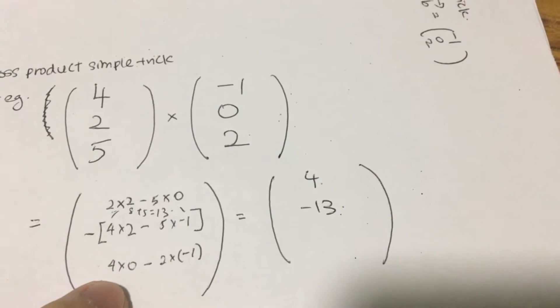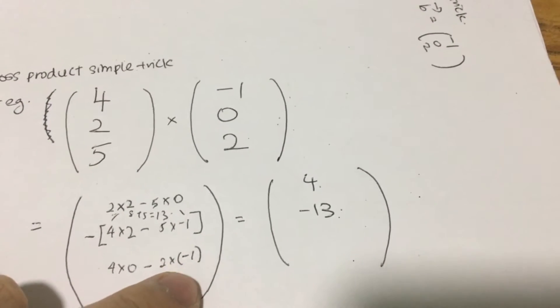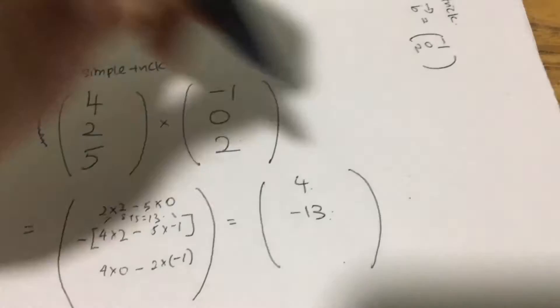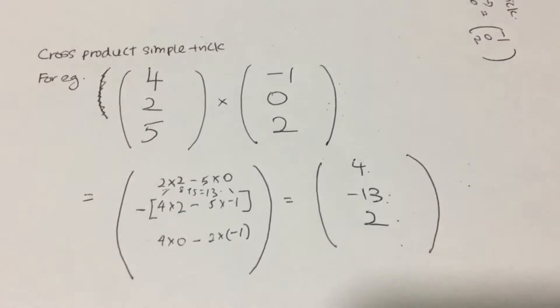And last but not least, 4 times 0 is 0, minus 2 times negative 1. It gives you negative 2, but with a minus in front and that will give you 2. So this is the final answer.